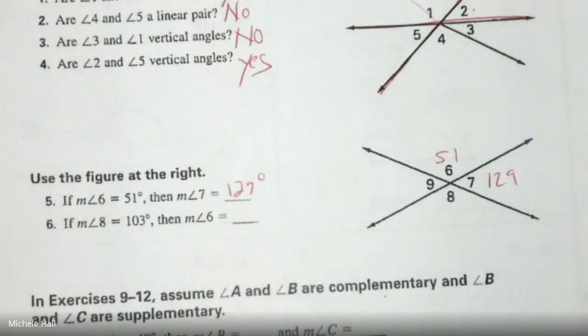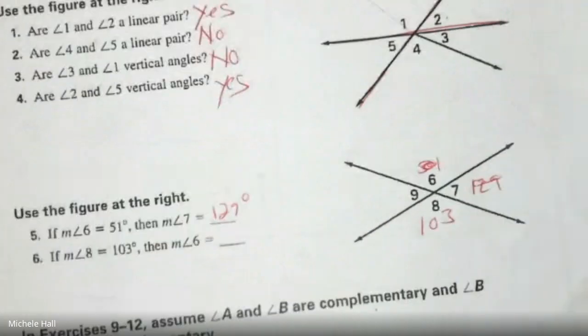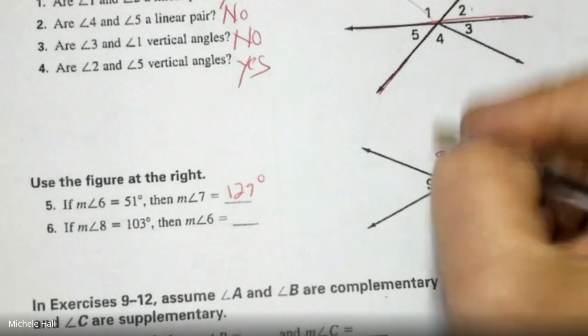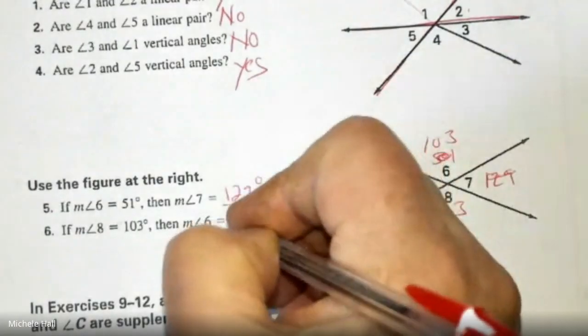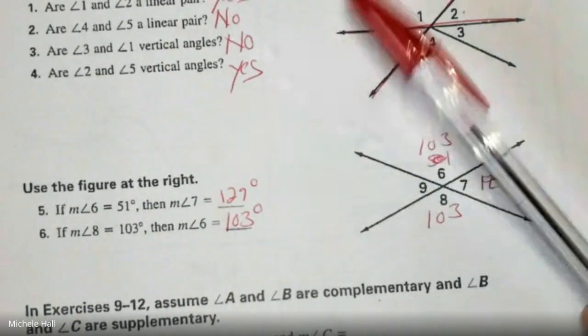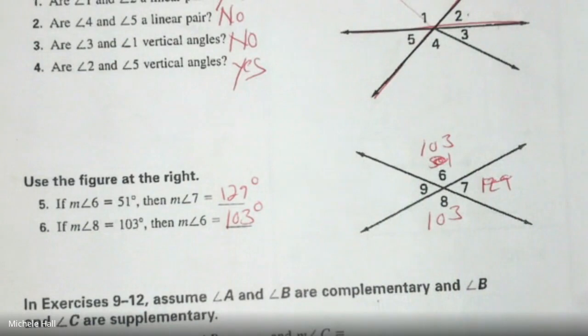If Angle 8 is 103, how much is Angle 6? Exactly. They are vertical angles and vertical angles are congruent. Last time in the homework, we had to use linear pairs and work our way over towards it. Now we can just look at it and say, oh, they're right across from each other as a rule. Vertical angles are congruent.